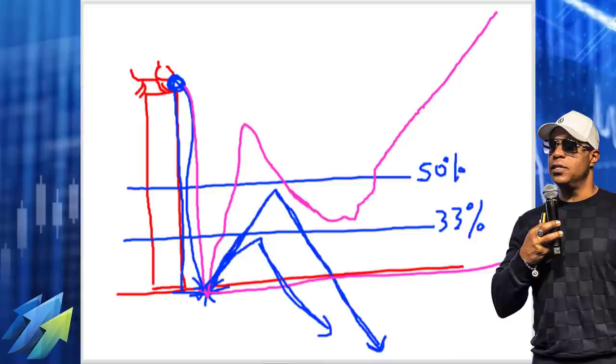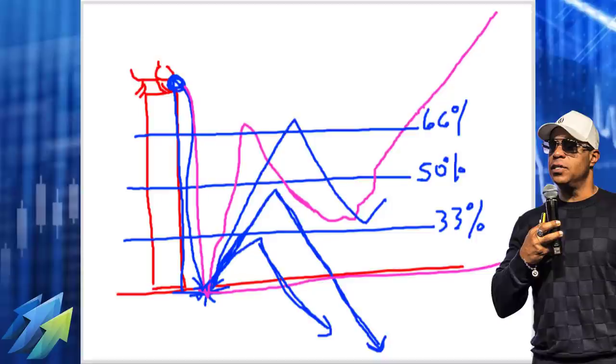In the same fashion we have the two-thirds level. And if your cat bounces all the way to the two-thirds, the pullback's going to be shallow, shallower than the pavement. If we go all the way back to 100 percent, all the way back to the top, the pullback should even be shallower.